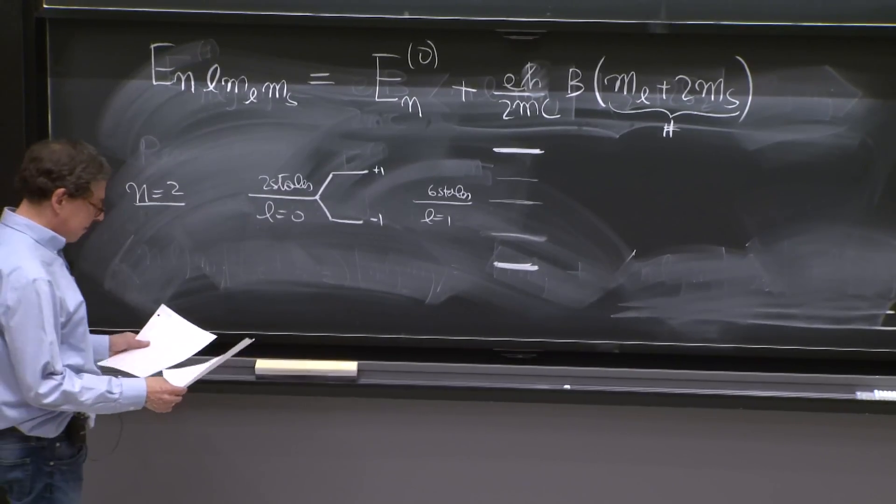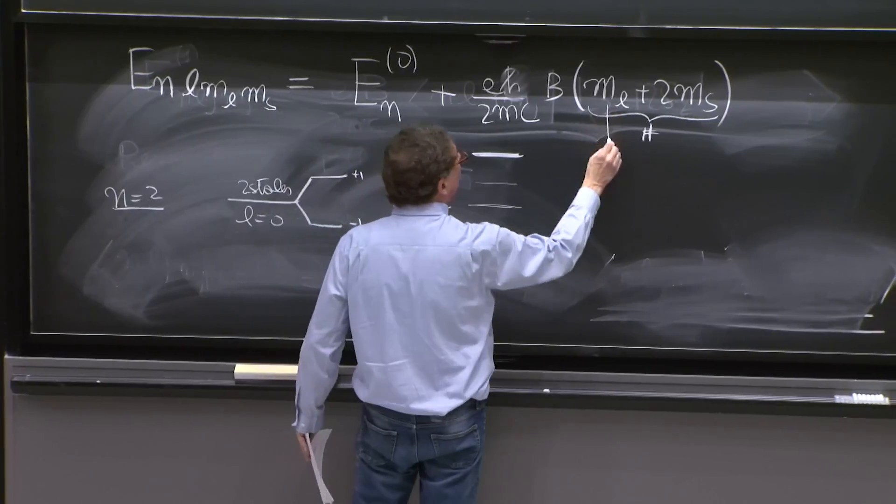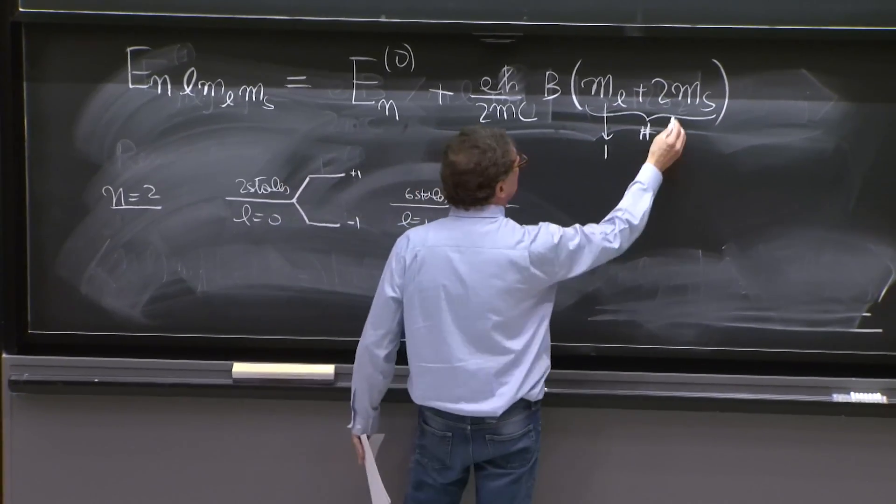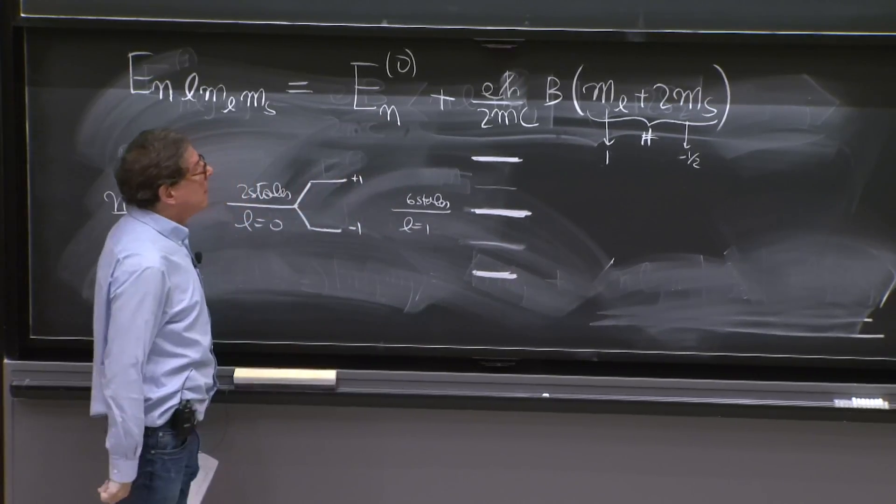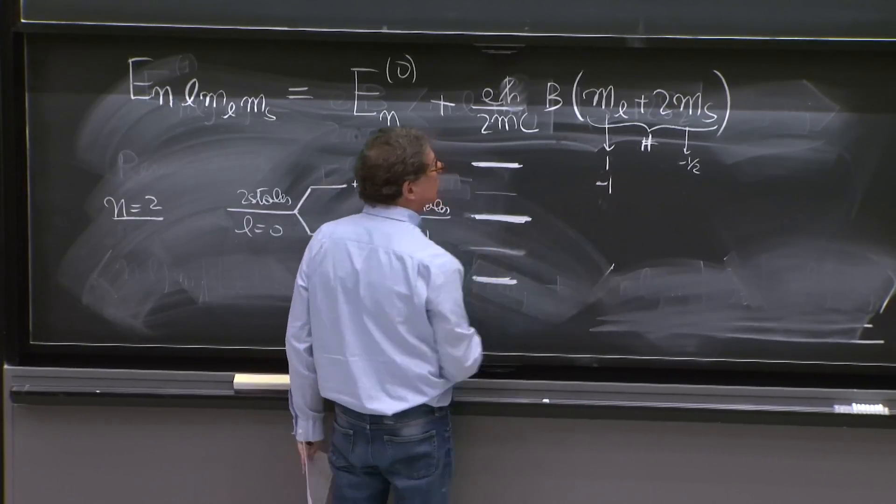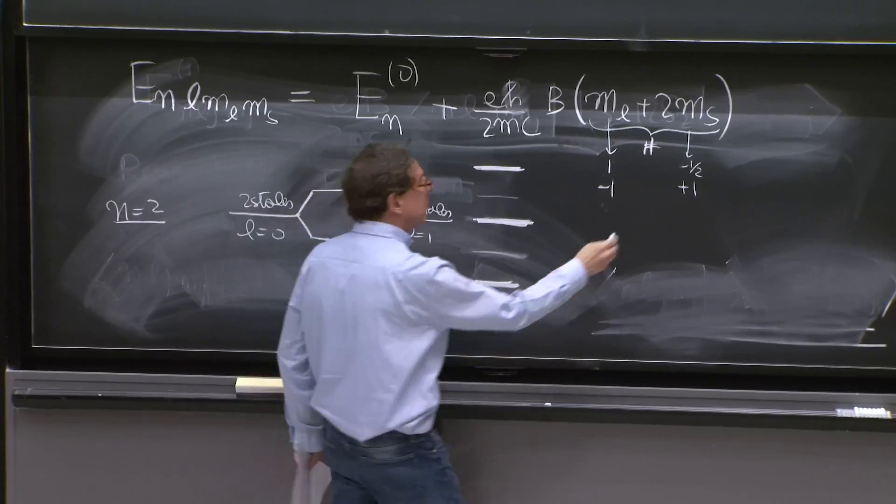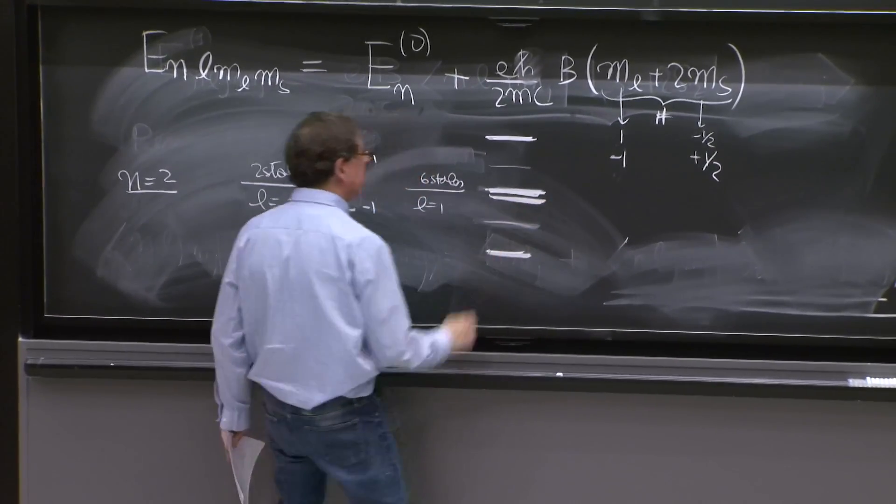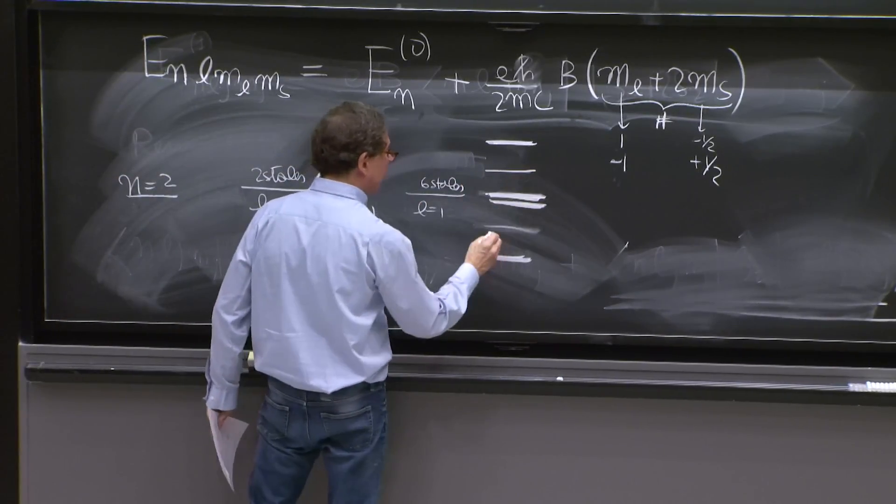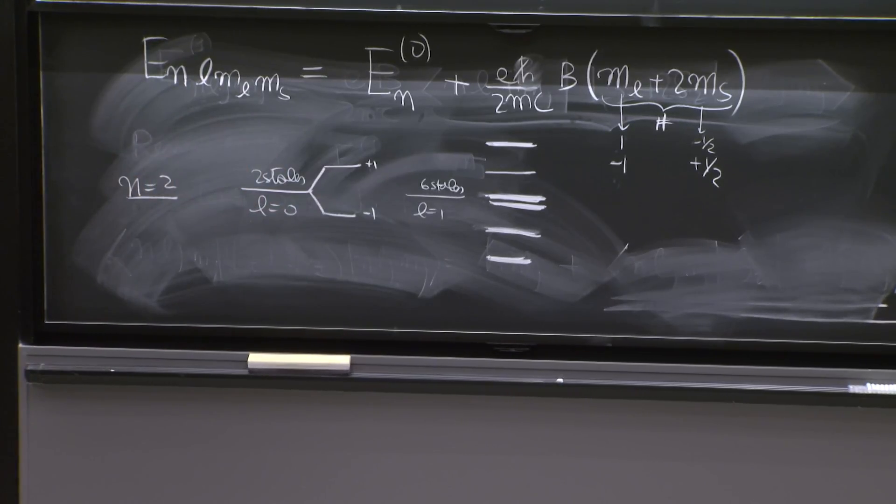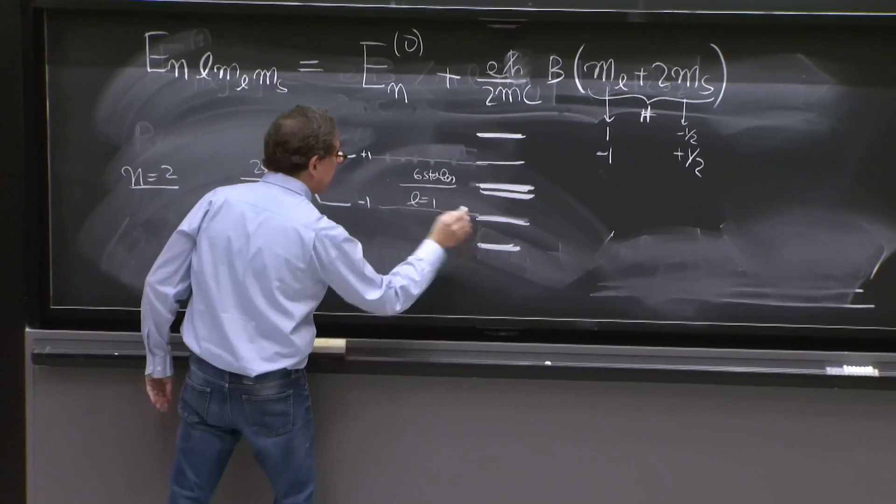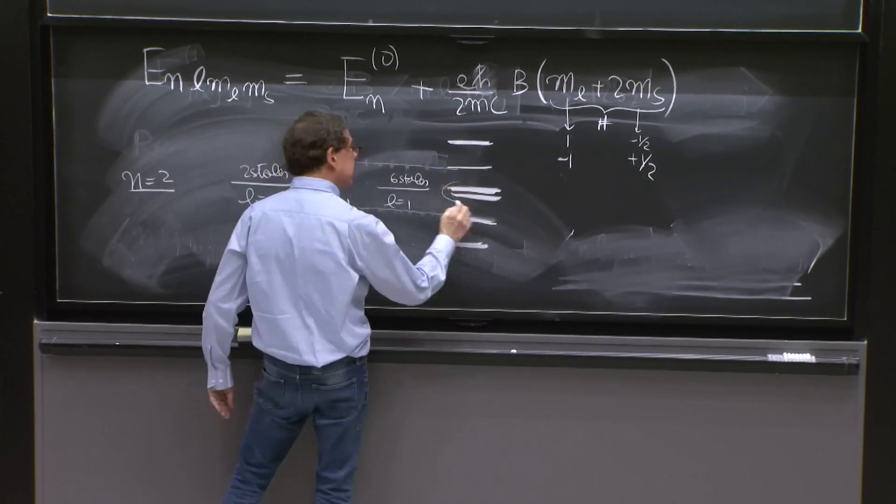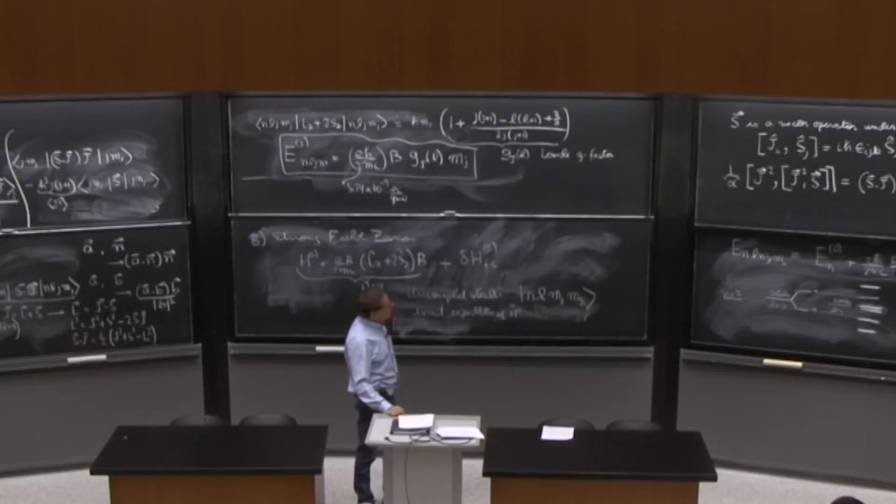You can have more states. For example, if you take ml equals 1 and ms equals minus 1 half, you get 0. But you can also have ml equals minus 1 and ms plus 1 half, which also gives you 0. So here there's a degeneracy. There are six states. You will see that there's one here and one there. So here is the nature of the degeneracy. The six states have split like that. There's a degeneracy across l multiplets and there's a degeneracy within l multiplets. So two types of degeneracy. And that's what you will have to consider when you think of the fine splitting.